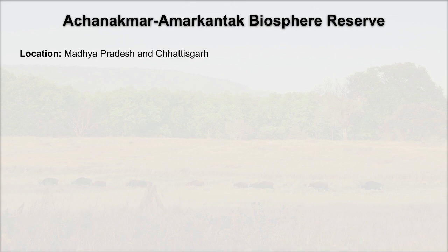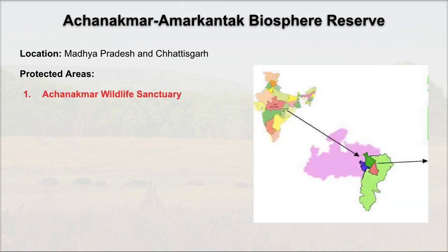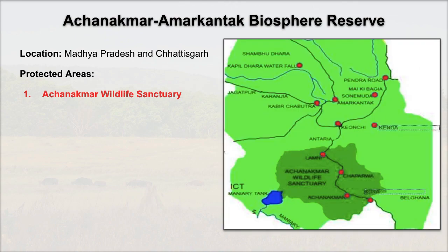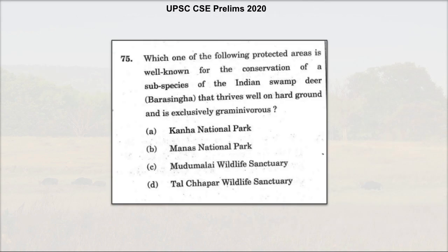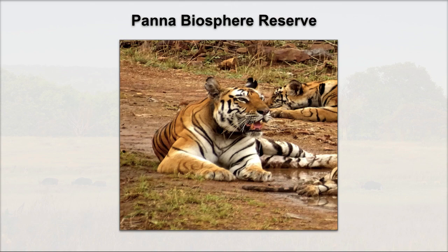Then Achanakmar-Amarkantak Biosphere Reserve, whose key fauna includes the Dhole, which was recently in the news. The location spans Madhya Pradesh and Chhattisgarh — two shared states. There is one wildlife sanctuary as the protected area. A UPSC 2020 question asked about the protected area for Barasingha — one who knows where Barasingha is found could answer it. Similarly, in Dhole's case, you should know where it is prominently found.